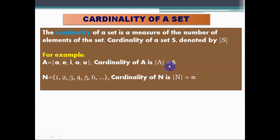For example, we have a set A which has five elements {a, e, i, o, u}. Then we can show the cardinality of A like this: cardinality of A equals 5. And we have the infinite set like N, then we can show the cardinality of N by infinity symbol. So that's all for today.